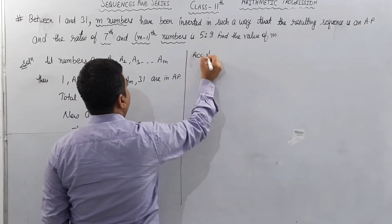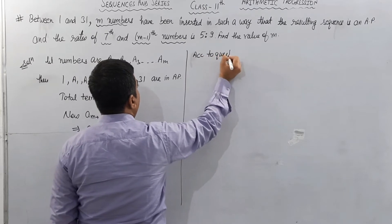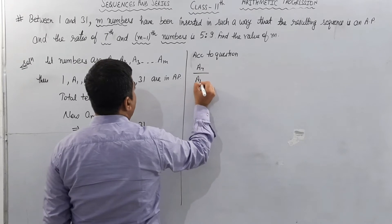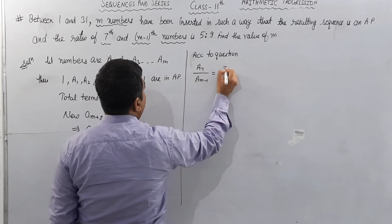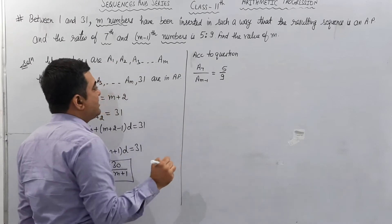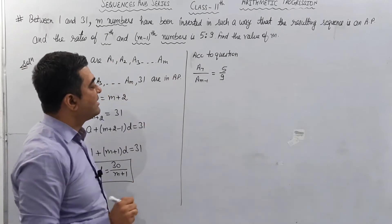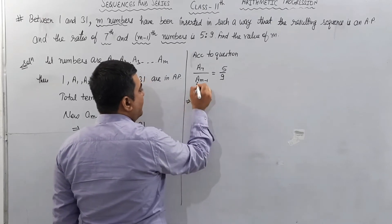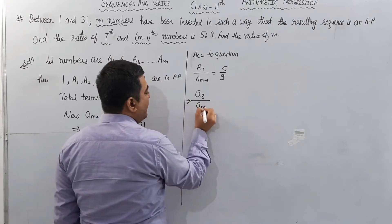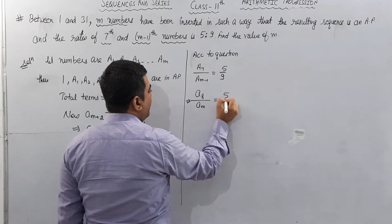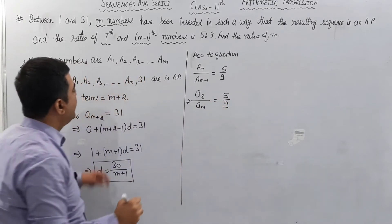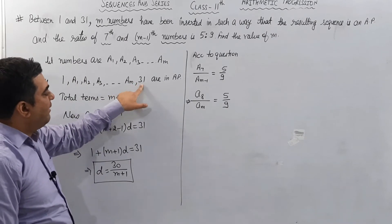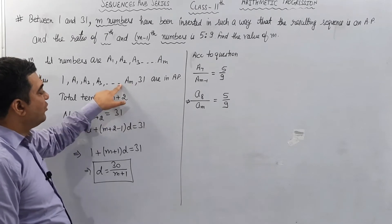Now ratio of 7th and (m-1)th number. According to question, a7 upon a_(m-1) equals 5 upon 9. 7th number means 8th term. (m-1)th number means mth term. 5 upon 9.